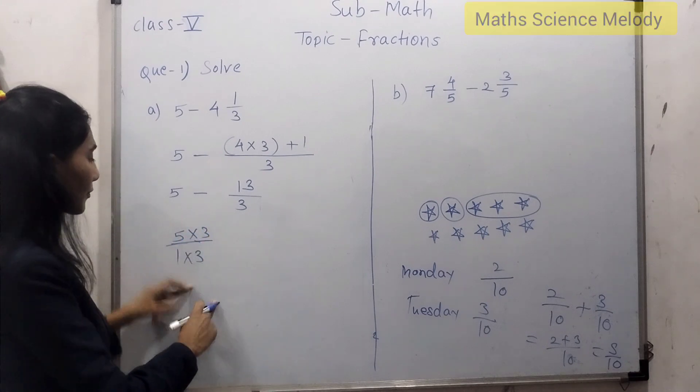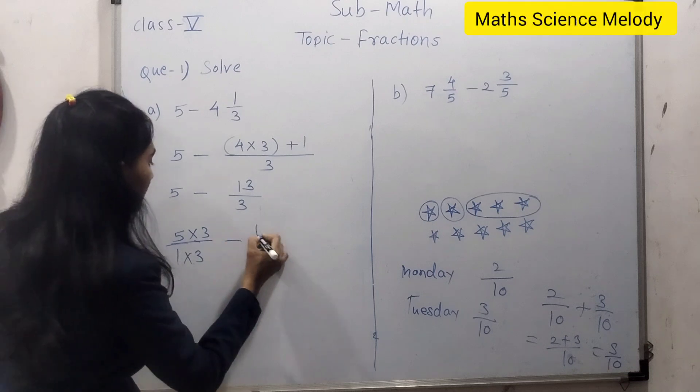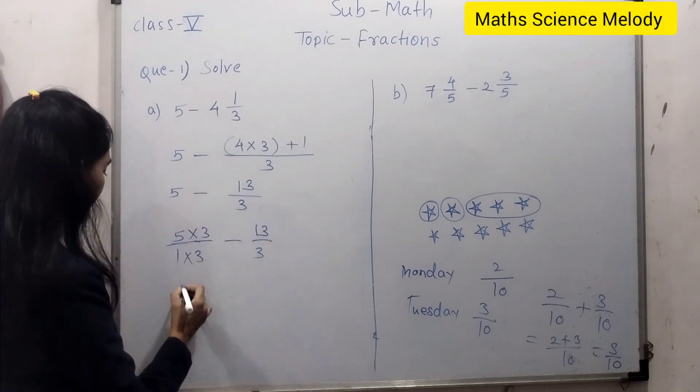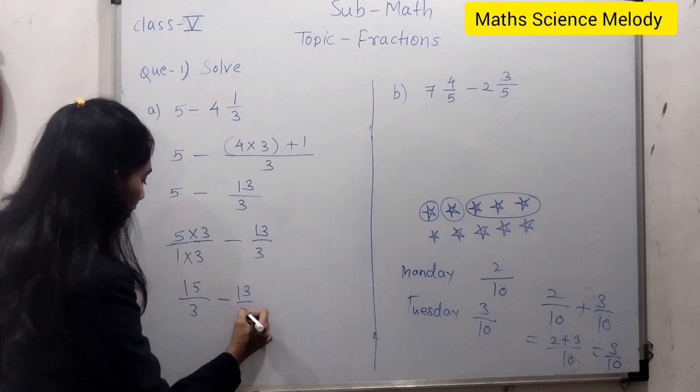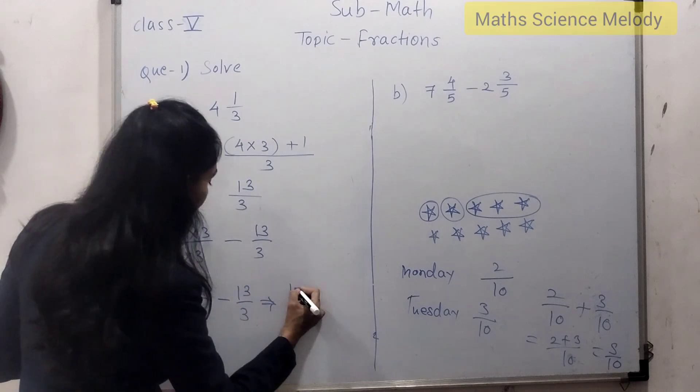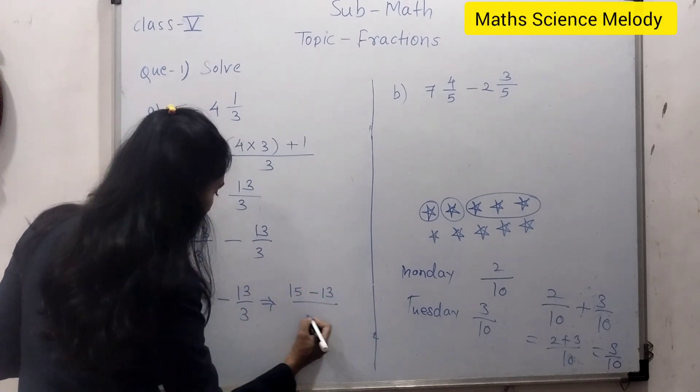Minus 13 upon 3. So it will be 15 upon 3 minus 13 upon 3. We get 15 minus 13 upon 3, which is 2 upon 3.